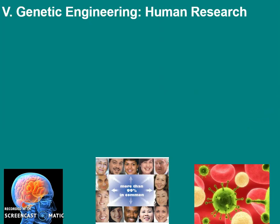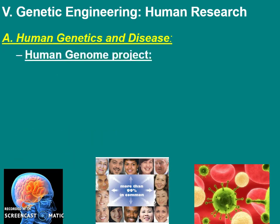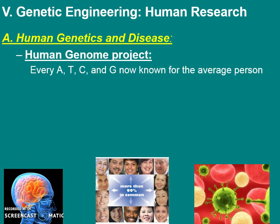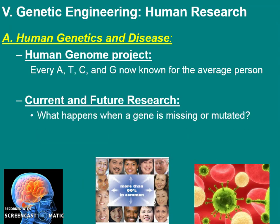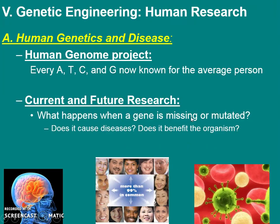We can also use DNA technology to help humans. We are trying to learn about the average human's DNA, and we actually know the exact sequence of A's, T's, C's, and G's for the average person. We're using that to understand what happens if a gene is missing or has a typo, which is often related to disease. This is helping doctors and scientists understand disease and maybe even fix it.